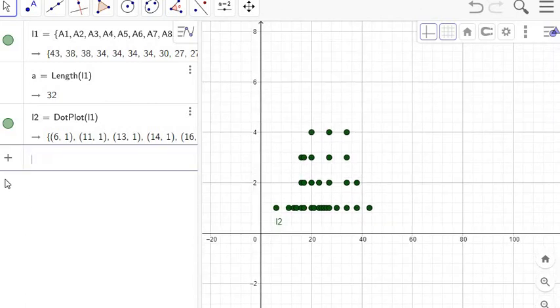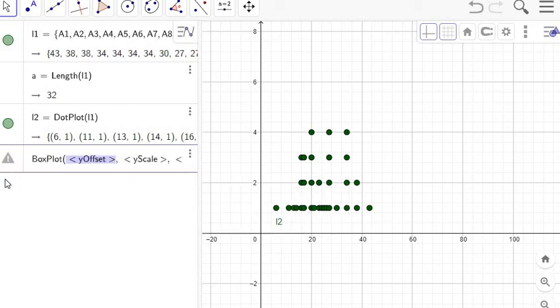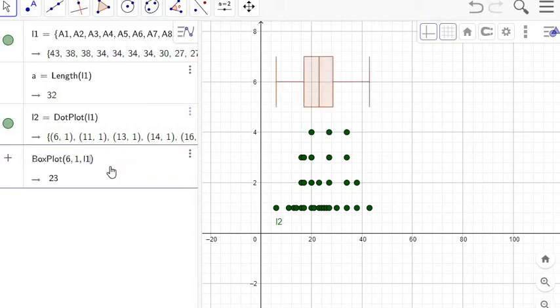And then a box plot, the command is boxplot, and there's different types of arguments. You saw when I was typing the word boxplot, it has lots of different ways to do it. The easiest way here is I'm going to actually use the first one. I'll go ahead and hit enter, and it'll show you. Y offset is where you want the center of the thing to be in the Y direction. I'm going to put it up here at 6, and then your Y scale is going to control how wide it is. I'm going to do 1, and then the raw data, L1. So that'll be the command.